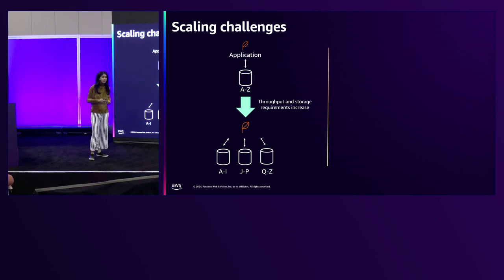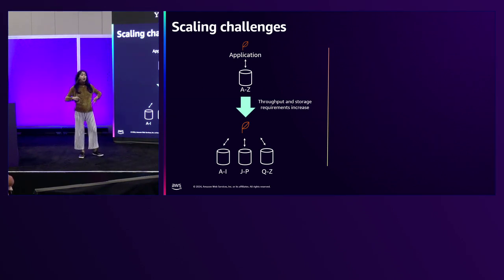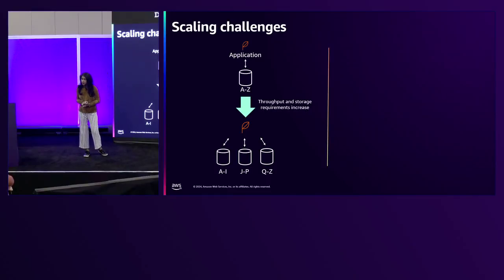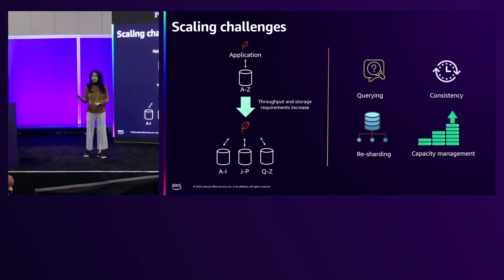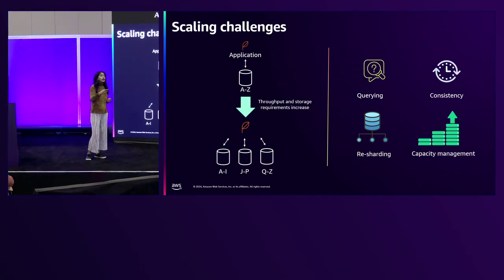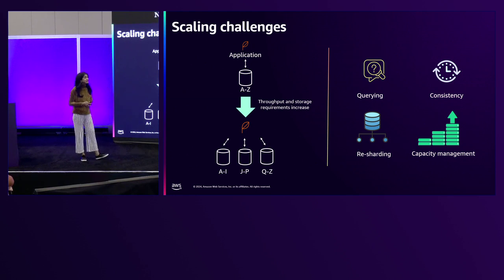What you end up doing is breaking apart your database into little components to get that scale with parallelism. Now you're going from a scale problem to a management problem — you get the scale but you have all these databases to manage. This is commonly called sharding, which is probably a technique you're all familiar with. Sharding comes with a whole lot of problems. Let's start with querying: when you've broken your database apart and distributed your data, your application layer needs to know which database to query.